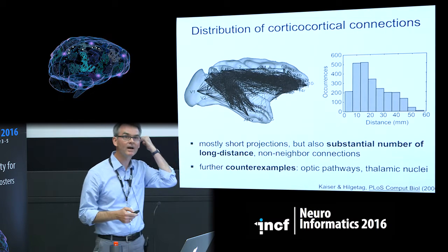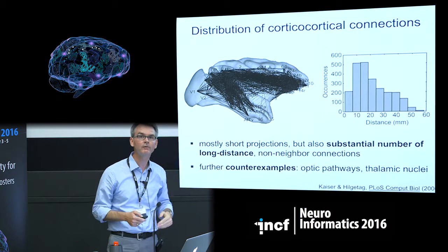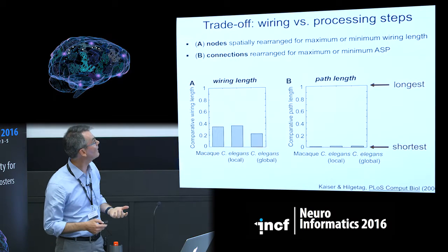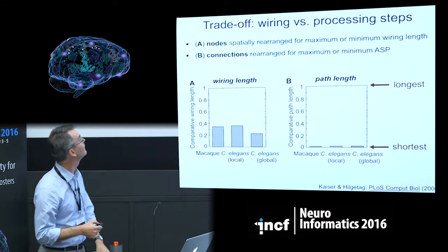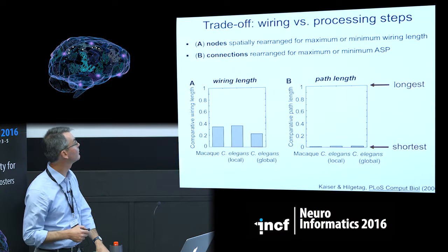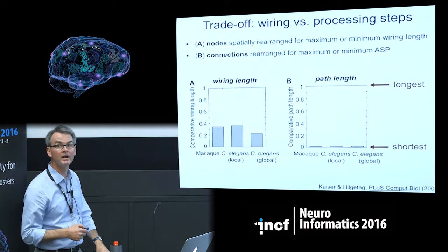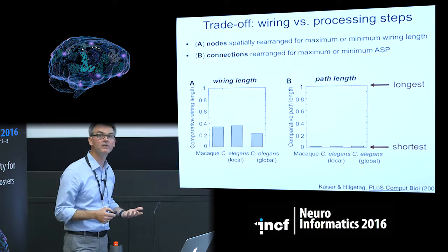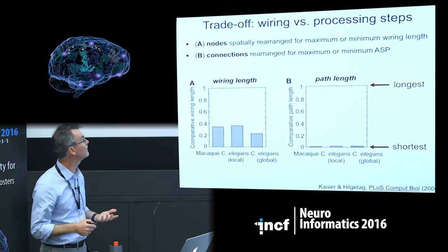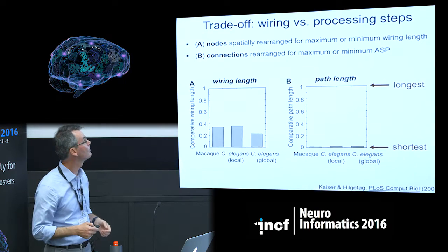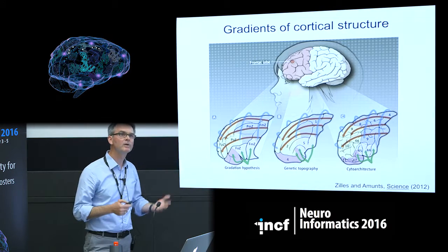There are a number of counter-examples: the optic pathways span almost the entire diameter of the brain, projecting from the very back to the front and thalamic nuclei, which are next to each other but unconnected. If you compare directly the wiring minimization of actual brain connectivity — both at the systems level and of C. elegans — to the theoretically possible minimum, you see it's not close to the minimum. However, other organizational features such as average shortest path lengths are actually quite close to the theoretical minimum. So wiring minimization may not be the full story.